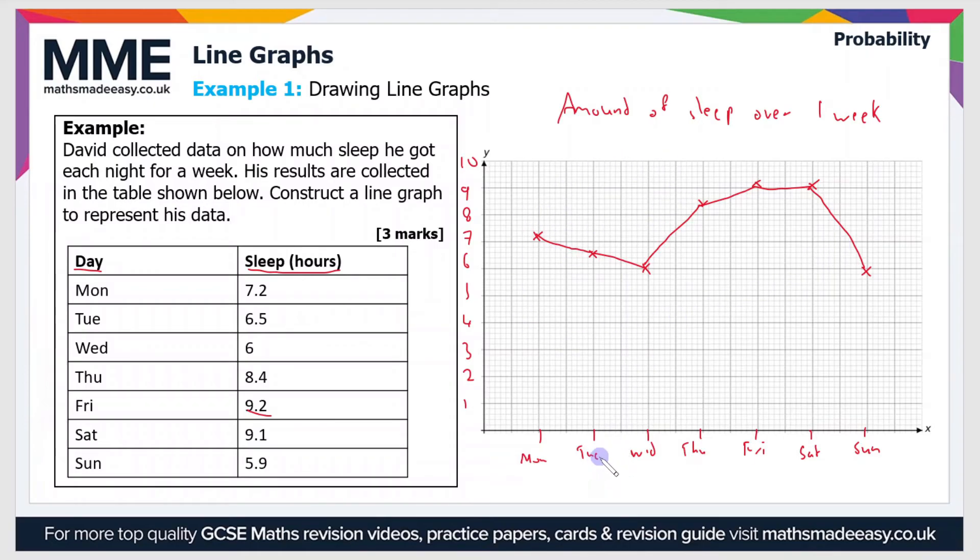And then we just need to label the axes. The x-axis is days of the week, and then the y-axis is sleep, and that's measured in hours, so I'll put that in brackets. So that is a complete line graph.